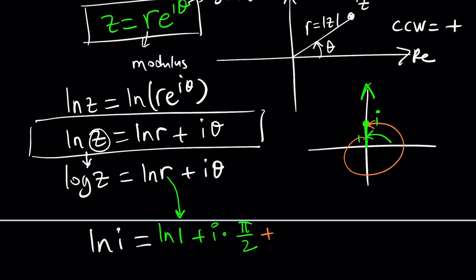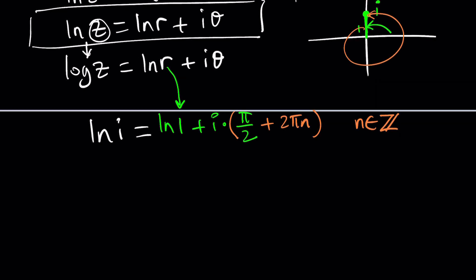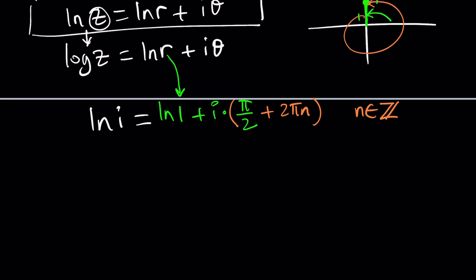So if you want the general solution, then you would probably add something like two pi n, where n is an integer. But if you want the principal value, then you can replace n equals zero, and that'll give you the principal value. That's how you can find the principal value of the argument, or the principal argument, and the principal value of the logarithm.